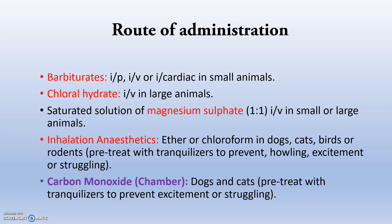Regarding routes of administration: barbiturates are given intraperitoneally, intravenously, or intracardiac in small animals. Chloral hydrate is administered IV in large animals. Saturated solution of magnesium sulfate can be given IV in small or large animals. Inhalation anesthetics such as ether or chloroform are used in dogs, cats, birds, and rodents.